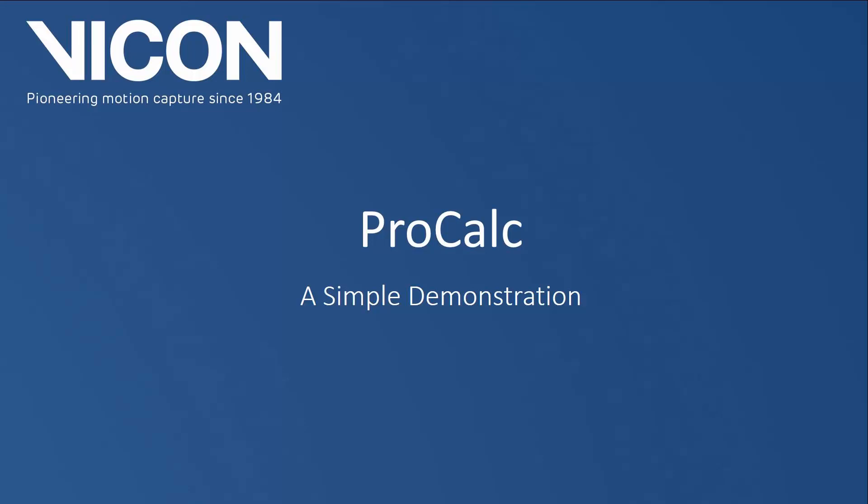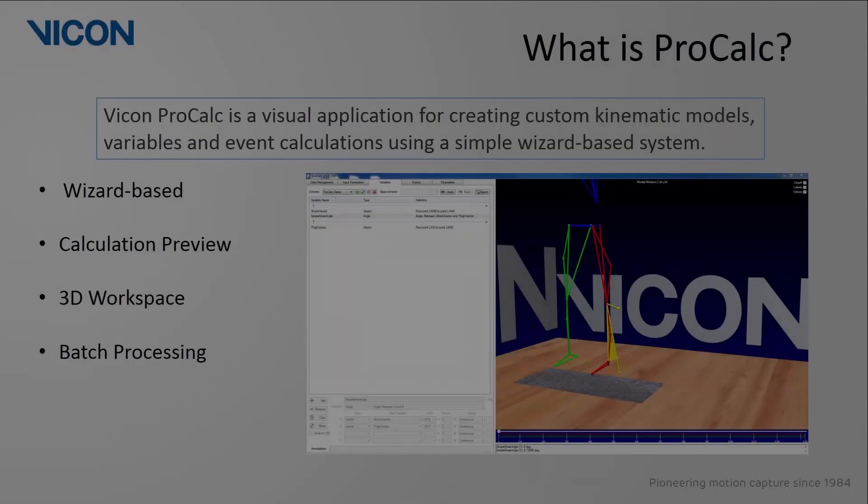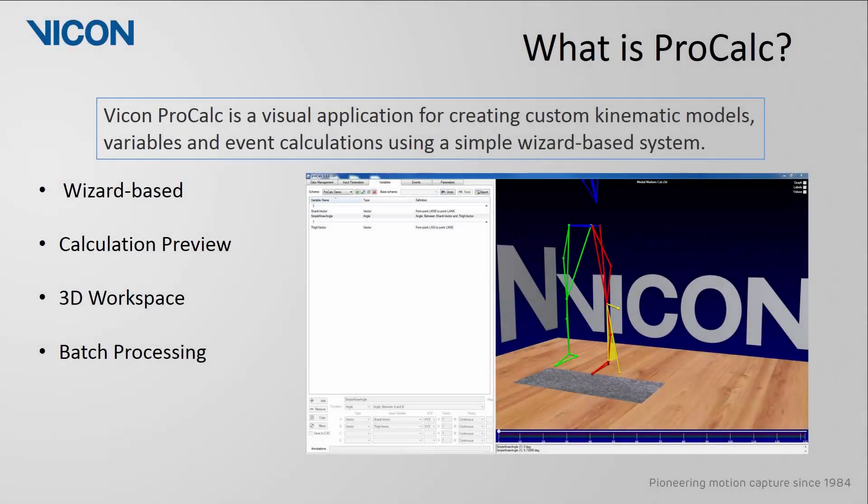The following video is a simple demonstration on how you can use ProCalc to perform some simple calculations on your Nexus data. ProCalc is a visual application for creating custom kinematic models, variables, and event calculations using a simple wizard-based system. This means that all calculations are performed using drop-down boxes, which guide you through the process.